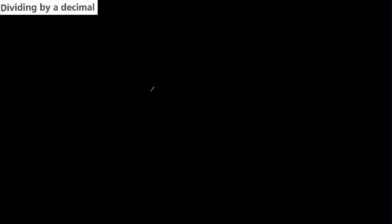Firstly, if you divide 12 by 4, which is divisible, the answer is going to be equal to 3. But if you use a number like 10 divided by 4, it's going to give a decimal number. I'm going to show you how to find that decimal number.